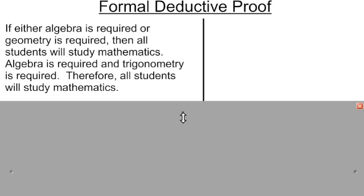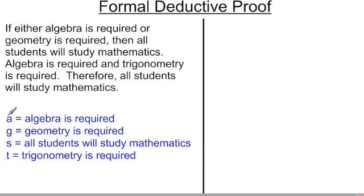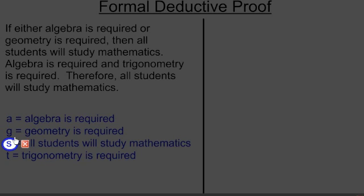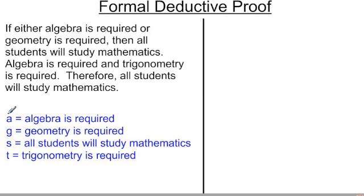Before we start any sort of argument, what we do is we define the terms — we always do this at the beginning. Just as we did in our categorical syllogism, we're going to use some variable names to represent our terms. So we'll start off with our first term, algebra, and we'll represent it with the letter A. We'll use G for our second term, geometry. We'll use S for our third term, that all students will study mathematics. And for our fourth term, we'll use T for trigonometry being required.